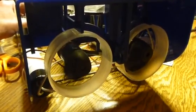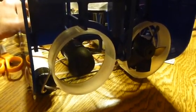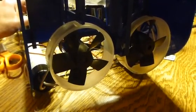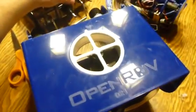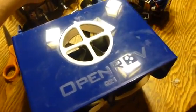OpenROV is propelled by three off-the-shelf brushless motors, two in the back which allow it to move forward and aft as well as turn, and one vertical thruster which allows the neutrally buoyant ROV to change depth.